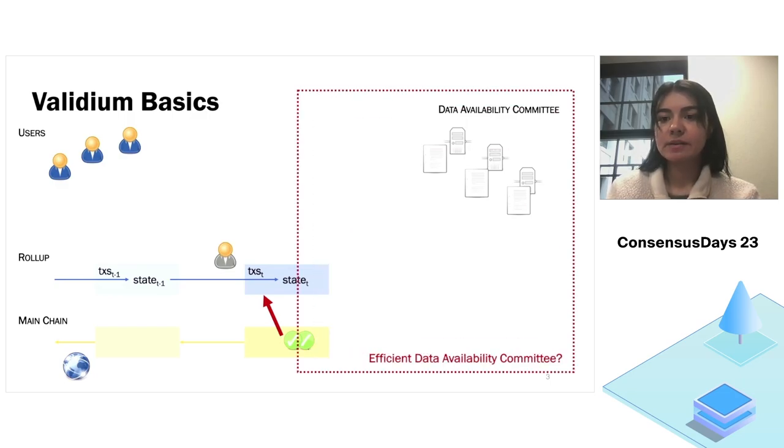So the question is, how do we construct this data availability committee? Because currently, what is used is the entire data is just replicated among the storage nodes among this data availability committee members. And by replicated, I mean that every node stores the entire copy of the data, which is clearly not efficient and not scalable, which also leads to centralization. So from now on, I will focus on trying to answer this question, how do we design an efficient data availability committee?